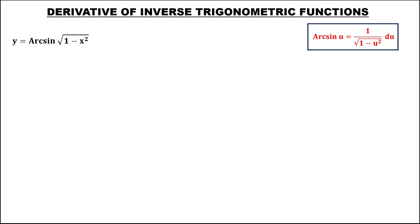For this problem, to find the derivative of inverse trigonometric functions, for this given, the derivative of inverse sine using this formula. We have u equals the square root of 1 minus x squared.